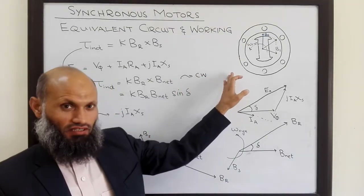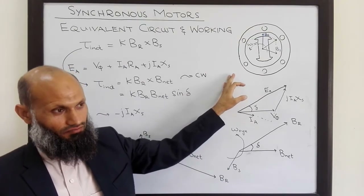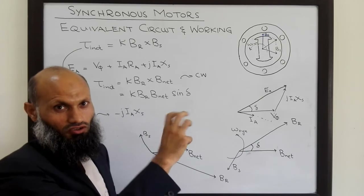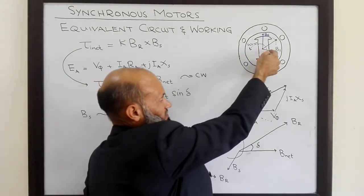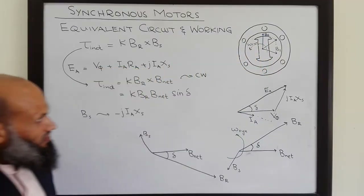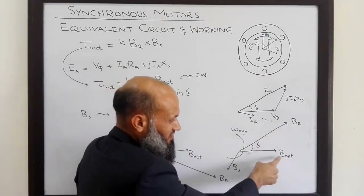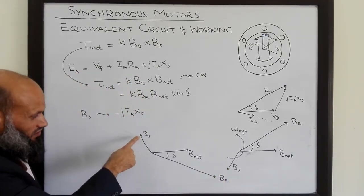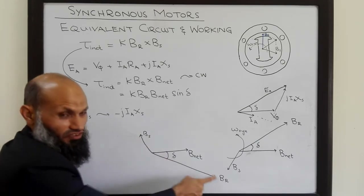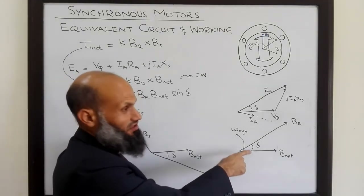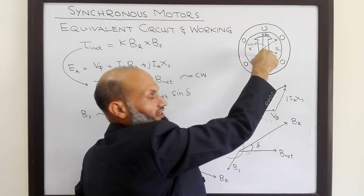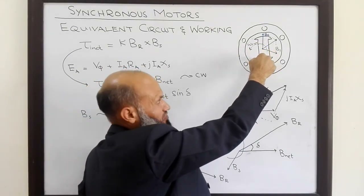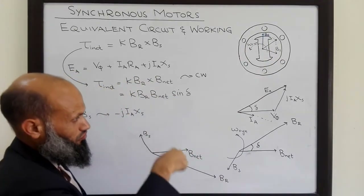Let me clarify a common misunderstanding. Some students think that if we change the direction of rotation of the rotor in a synchronous motor, it will become a generator — but that is not the case. For both cases, the rotor rotates in the same direction. In the case of generators, the rotor magnetic field leads both the net magnetic field and the stator magnetic field. In the case of motors, the stator magnetic field leads the net and rotor magnetic fields. Therefore, in generators the induced torque is opposite to the direction of rotation, while in motors the induced torque is in the same direction as the rotation of the rotor.